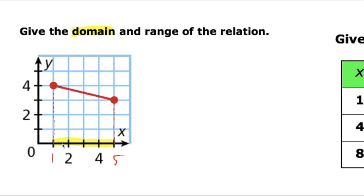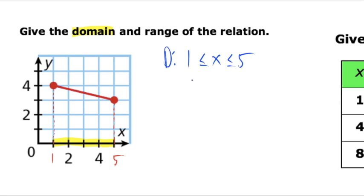There are two different ways we can describe the domain. We could say the x values are between one and five using inequality notation. If you notice the dots were solid, we get the 'or equal to' piece on both inequalities — this notation is just saying we're between one and five inclusive, so we include the values of one and five. That's one way of writing it.